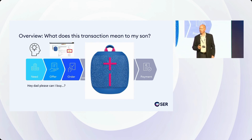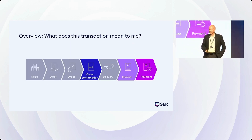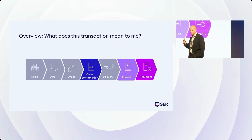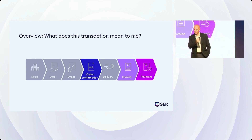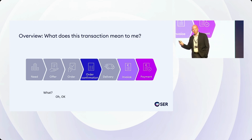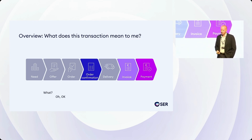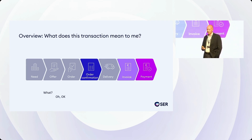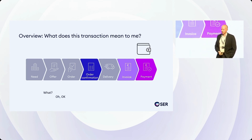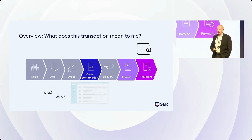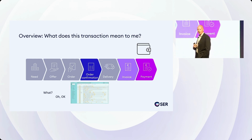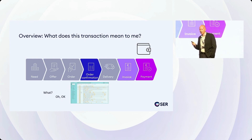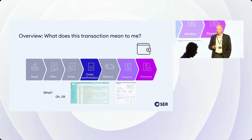But what about from my perspective? The bank of mum and dad, typically — a role I'm sure is really familiar to most of you out there. He asked me, I asked him what it was, I said fine, and then I paid the bank. And then because it's my Amazon account, I got the order confirmation, and usually Amazon sends me an invoice as well.